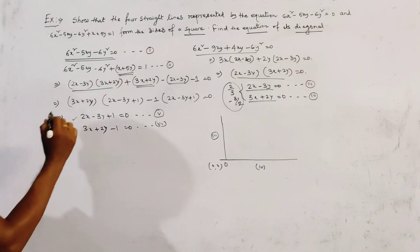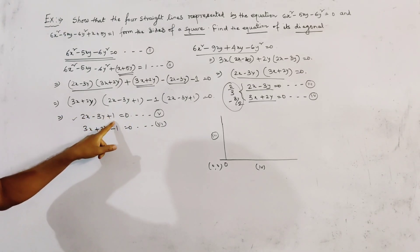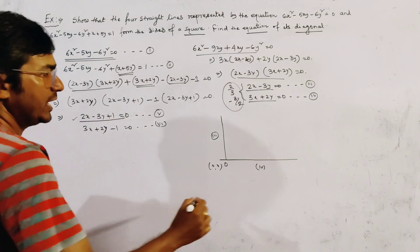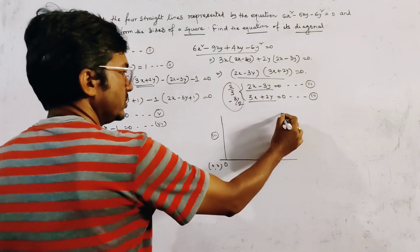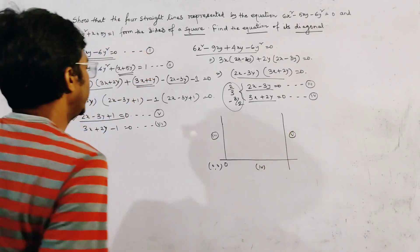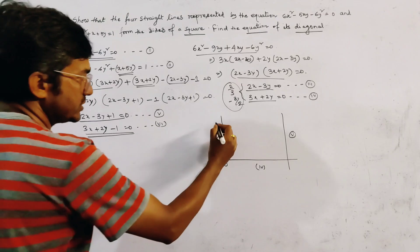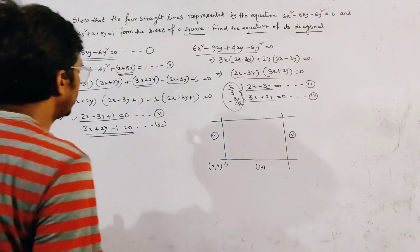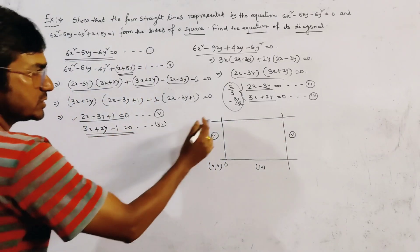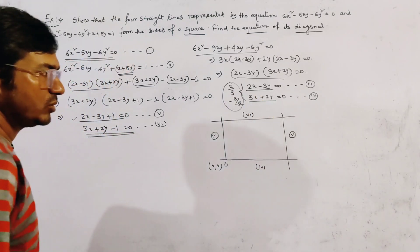From relation number 5, the line 2x - 3y + 1 = 0 is clearly parallel to line 3 (2x - 3y = 0). So line 5 is parallel to line 3. Similarly, line 6: 3x + 2y - 1 = 0 is parallel to line 4: 3x + 2y = 0.